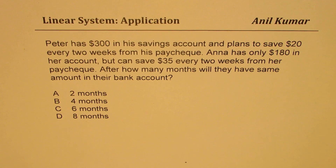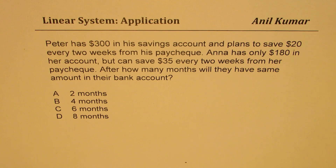The question here is: Peter has $300 in his savings account and plans to save $20 every two weeks from his paycheck. Anna has only $180 in her account but can save $35 every two weeks from her paycheck. After how many months will they have the same amount in their bank account? The four choices are 2, 4, 6, and 8 months.